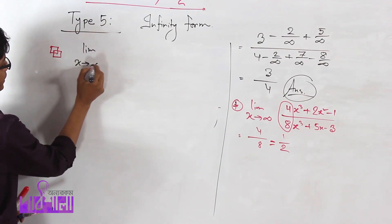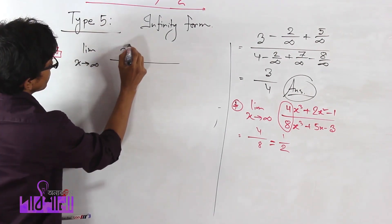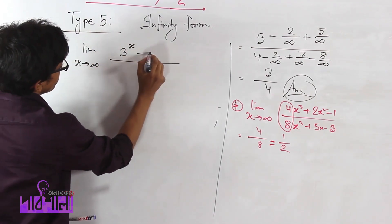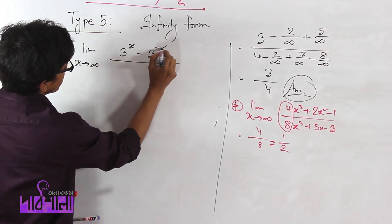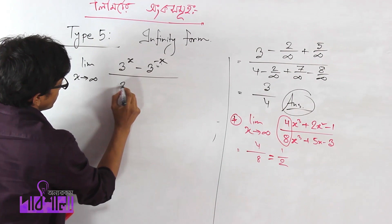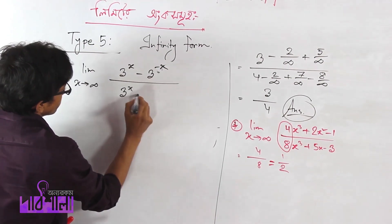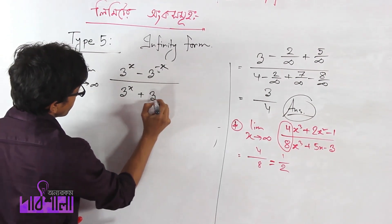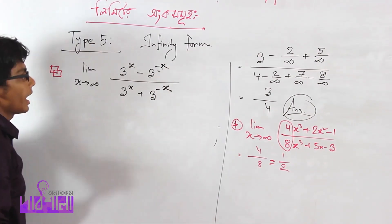Now let's evaluate: limit as x tends to infinity of (3 to the power x minus 3 to the power minus x) divided by (3 to the power x plus 3 to the power minus x). This is the infinity form.